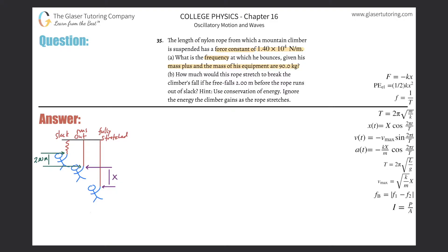Under the assumption of simple harmonic motion, I can use the formula that tells us the period equals 2π multiplied by the square root of the mass oscillating divided by the force constant. I can solve for T just knowing these two pieces. The problem asks for frequency, but I know I can find the frequency once I know the period.